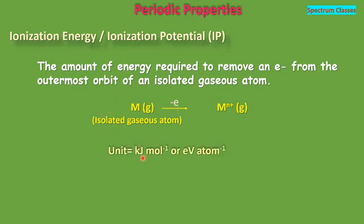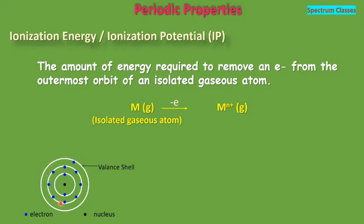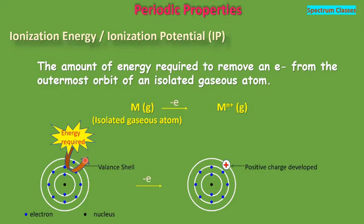Ionization energy is measured in kilojoule per mole or in electron volts per atom. This can also be better understood with a figure. Here is the model of a sodium atom which has one electron in its outermost shell, that is 3s1. The energy required to remove this electron is termed as its first ionization energy. After removal of the electron, this atom is converted into a positively charged ion.